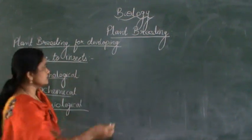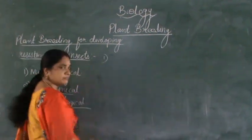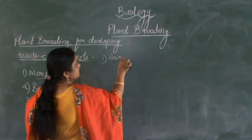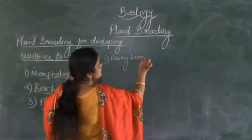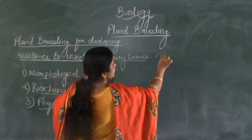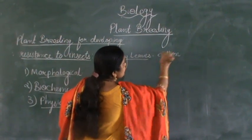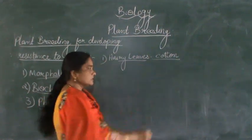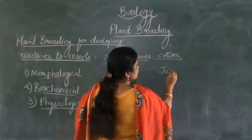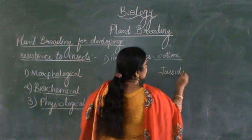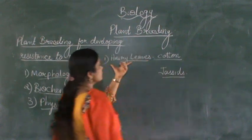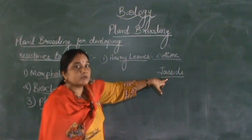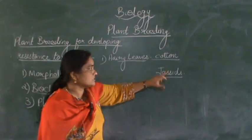For example, in certain cotton plants the leaves are hairy. Hairy leaves in cotton plants. The main insect which affects cotton plants is nothing but jassids. Because of the presence of hairy leaves, the jassid will avoid that plant — it won't eat the plant.